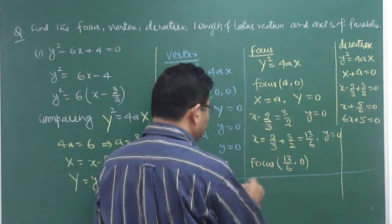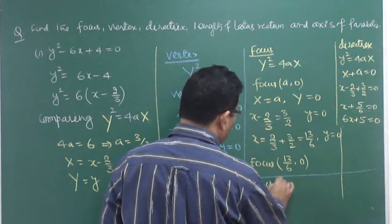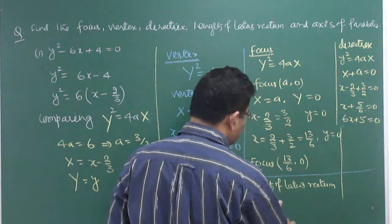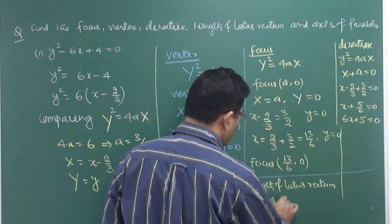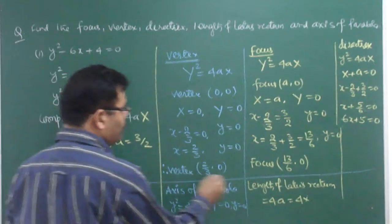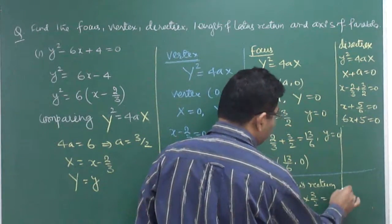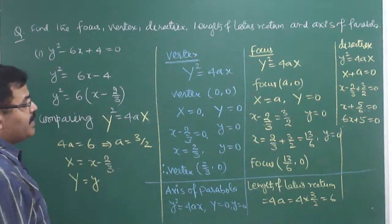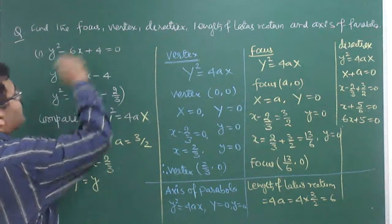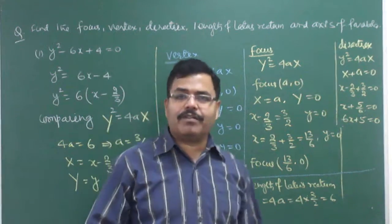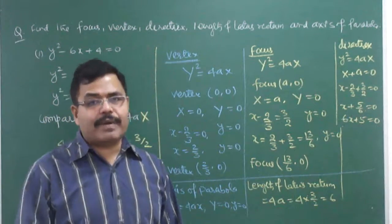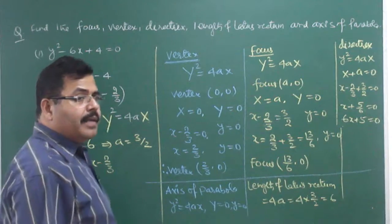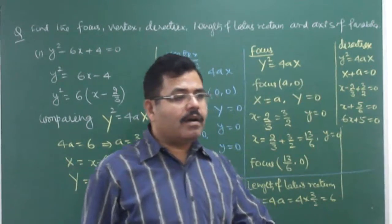The length of latus rectum is 4a = 4 × (3/2) = 6. So the length of latus rectum is 6. We can transform the given equation into the form y² = 4ax or x² = 4ay and apply the formulas accordingly. The parabola will be shifted from the x-axis or y-axis depending on the equation.